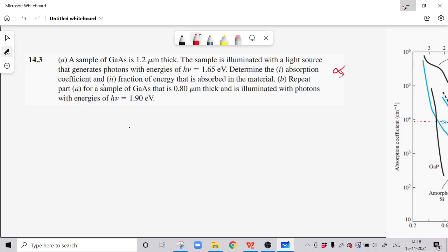First of all we will calculate lambda, the wavelength, which is equal to 1.24 micrometer divided by Eg, which is equal to h nu, which is 1.65. We get 0.752 micrometer.